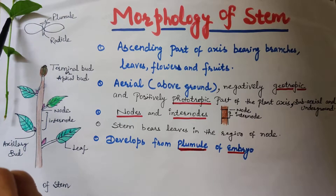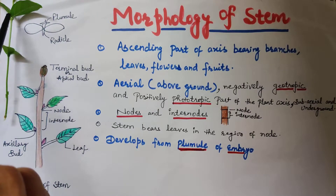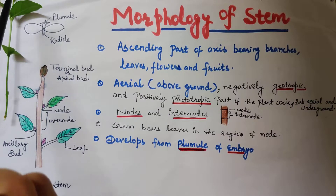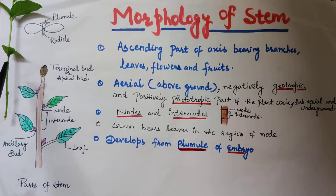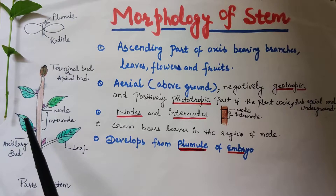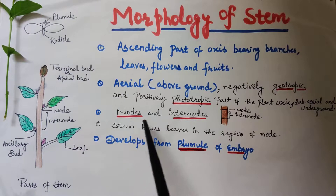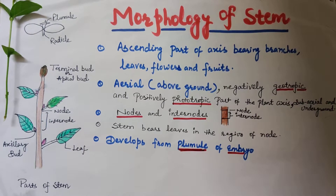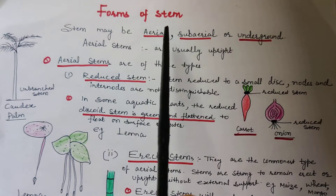Here in this picture, the point from where the leaf comes out is the node. The second point is also a node, and the gap between the two is called the internode. This is the identifying feature of a stem. The root, as we already discussed, is devoid of nodes and internodes. So the identifying feature of stem is the presence of nodes and internodes on it.